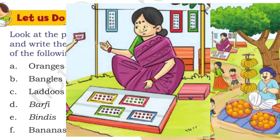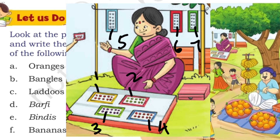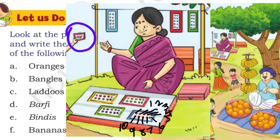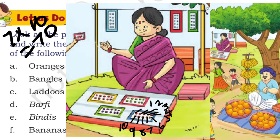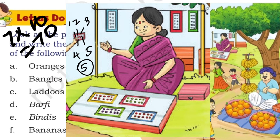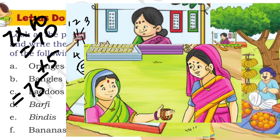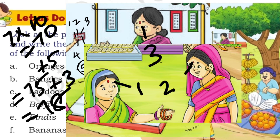Next we have bindis. There are 7 big packets of bindis, and a girl has a small bindi packet. Each big packet has 10 bindis: 1 through 10. So 7 into 10 is 70. The small packet has 5 bindis. So 70 plus 5 is 75. Additionally, two ladies are wearing 2 bindis, and the woman selling the packets has 1 bindi. So 75 plus 3 is 78 bindis.